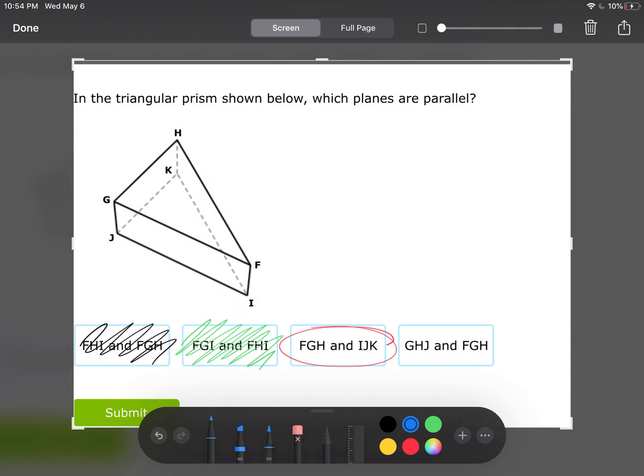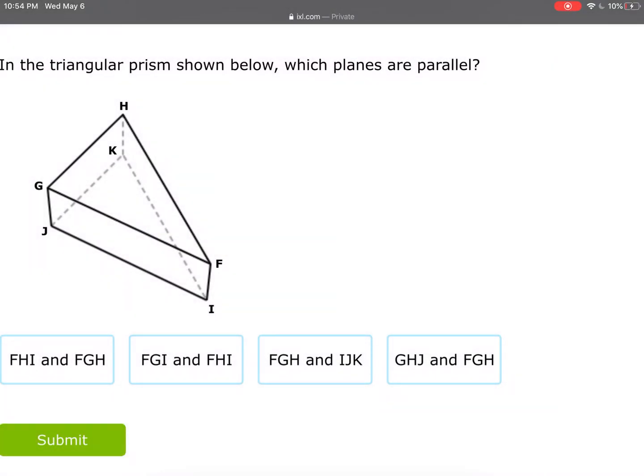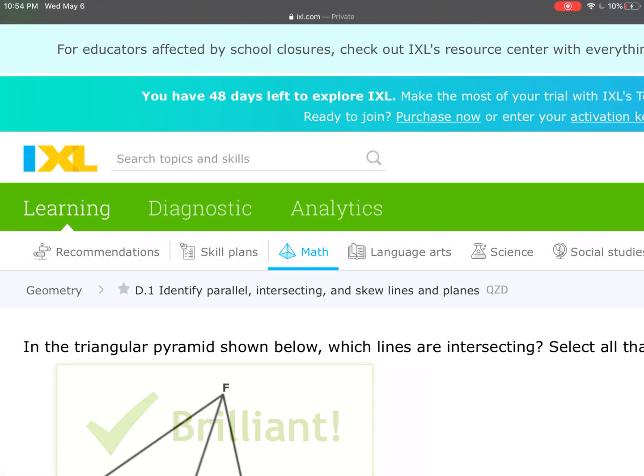GHJ. Here we go. And FGH. So we have the back of the pie and the top of the pie. Those do intersect, and we can see them intersecting right up here where I'm highlighting in green. That's where those two planes intersect. So the only answer choice that we have is going to be the third one. Brilliant, let's keep going.